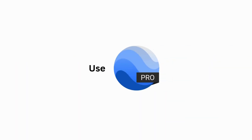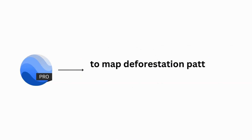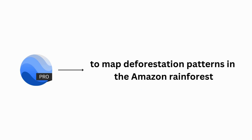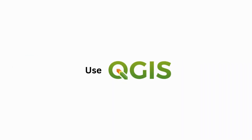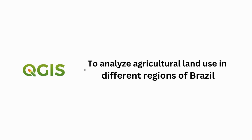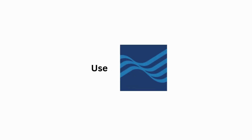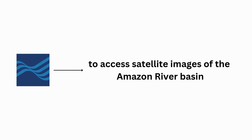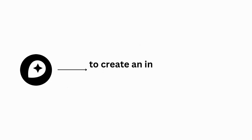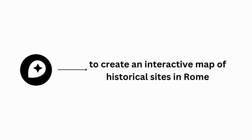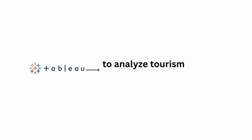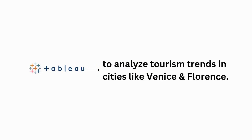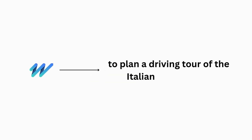For Brazil, use Google Earth Pro to map deforestation patterns in the Amazon rainforest. Use QGIS to analyze agricultural land use in different regions of Brazil. Use Earth Explorer to access satellite images of the Amazon river basin. For Italy, use Mapbox to create an interactive map of historical sites in Rome. Use Tableau to analyze tourism trends in cities like Venice and Florence. Use HERE WeGo to plan a driving tour of the Italian countryside.